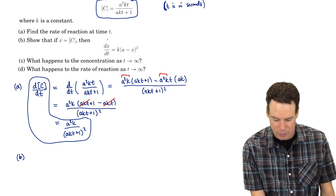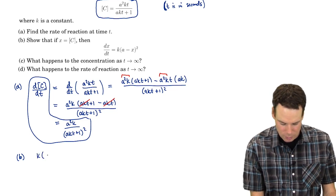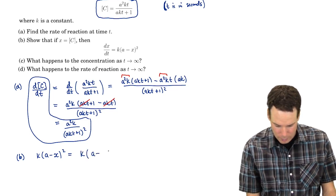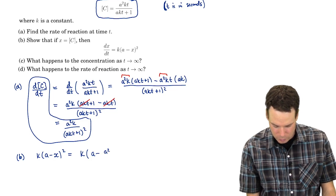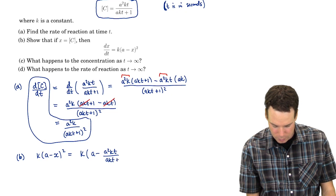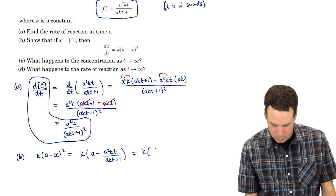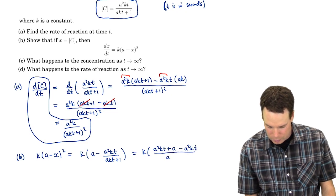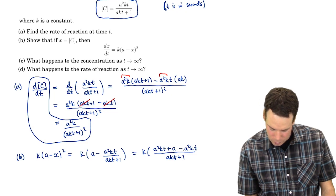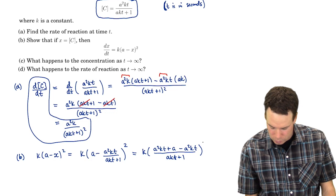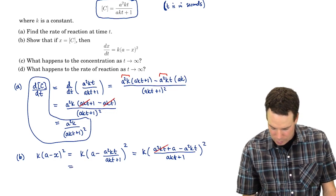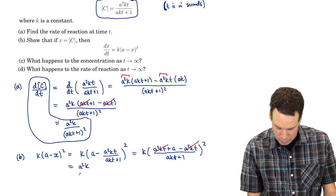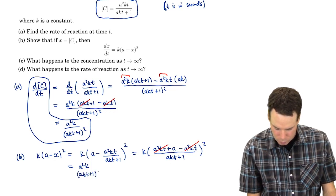We've already computed the derivative, that's the left hand side. Let's go ahead and compute the right hand side. k a minus x all squared. So that's k a minus and x is just our concentration C, so that's a squared kt over akt plus 1. Putting things over a common denominator, we get a squared kt plus a minus a squared kt. Looks like we get some cancellation in the top. I forgot the square on that one and there's also the square on this one as well.